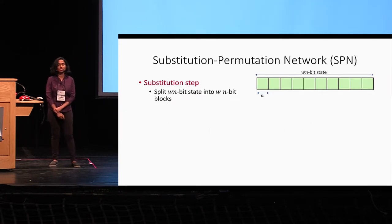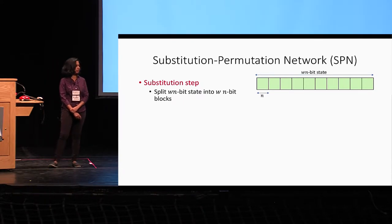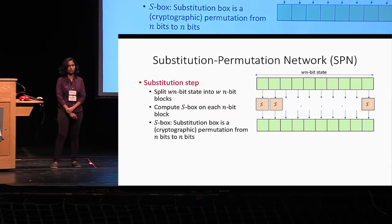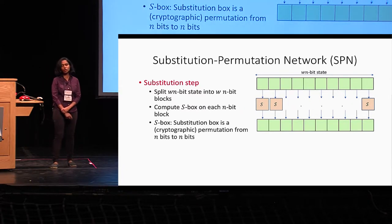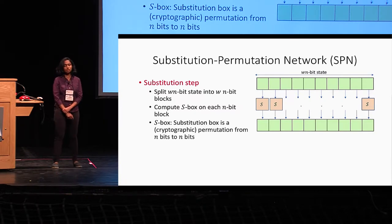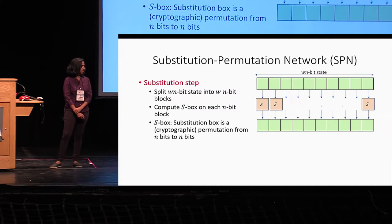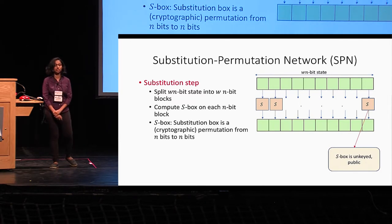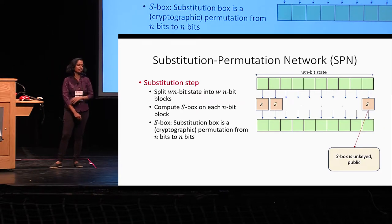An SPN consists of two steps: the substitution step and the permutation step. The substitution step takes a WN-bit input, splits it into W N-bit blocks, and computes the S-box on each N-bit block. The S-box is a substitution box — a cryptographic permutation from N bits to N bits. This is going to be the only source of cryptographic hardness in the construction. Notice that in the figure the S-box is unkeyed, illustrating that the S-box will be public in our setting.